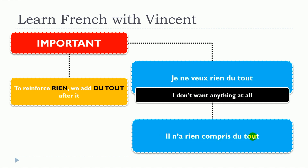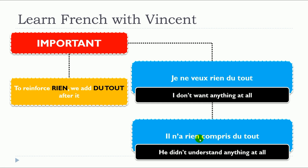Il n'a rien compris du tout. In that situation, it's quite interesting because we have the negative form of comprendre in the compound tense passé composé. So remember that ne will come before avoir, and then rien comes right after, then you put your past participle and finish with du tout. Work on this structure if you're not really sure because it's a bit complex. But once you practice it and understand it, it will be extremely simple. Il n'a rien compris du tout.